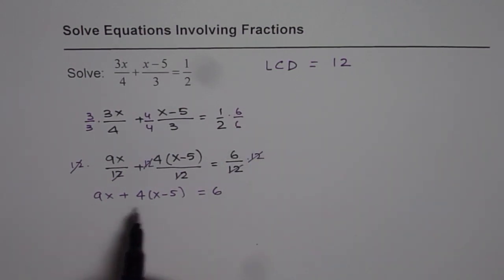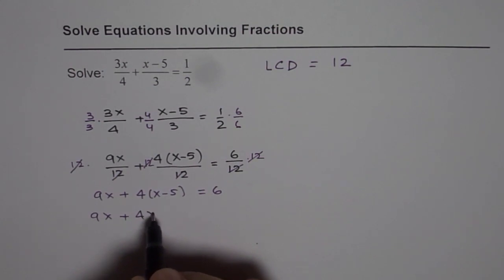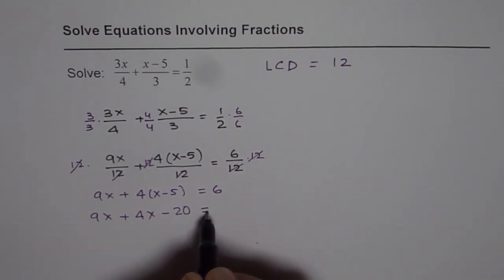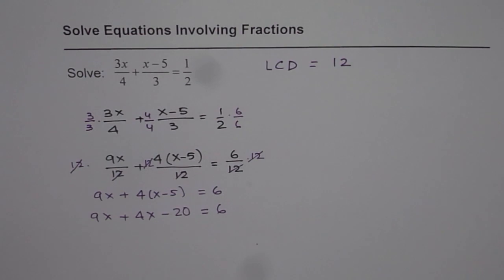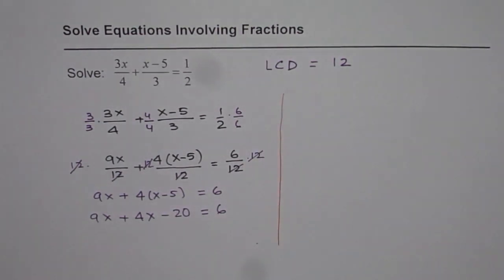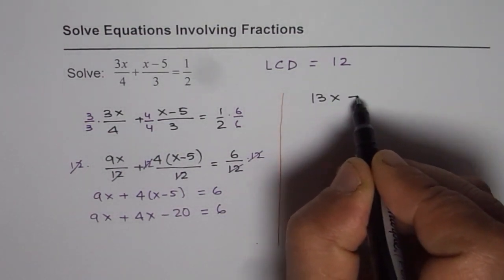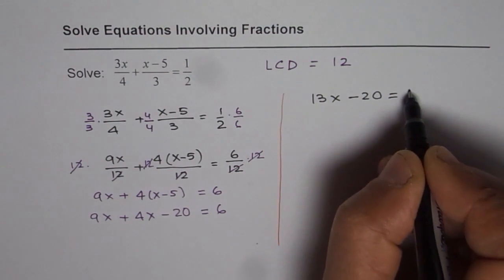Now let us expand this and simplify. So we have 9x plus 4 times x minus 4 times 5 is 20, equals to 6. We can bring all the terms to the same side and then solve. So let me rewrite this equation after combining 9x and 4x. So 9x plus 4x is 13x. We have 13x minus 20 equals to 6.